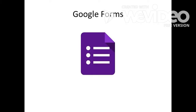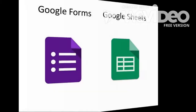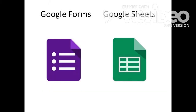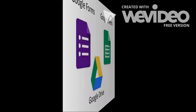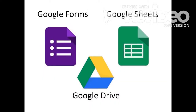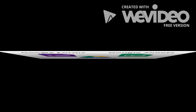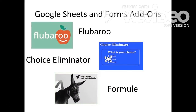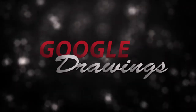We'll use Google Forms and it can collect all this information for you and organize it beautifully in a spreadsheet just with a few clicks of a mouse. What's nice is you can also use add-ons like Formule, Flubaroo, and Choice Eliminators. You will love it and it will save you a ton of time.